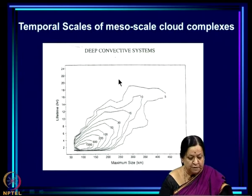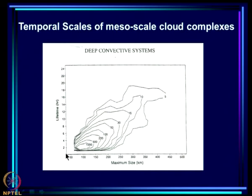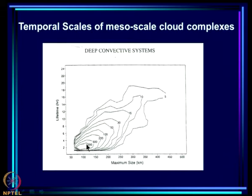Looking at mesoscale cloud complexes from a study over the Pacific: the horizontal size in kilometers is plotted against lifetime in hours. Smaller clouds stay around only for a couple of hours, while larger cloud complexes persist for almost 18 hours. Small clouds are much more frequent, but larger cloud complexes, though less frequent, last much longer.